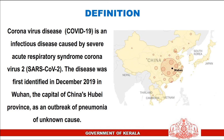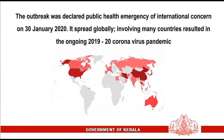Definition. COVID-19 is an infectious disease caused by severe acute respiratory syndrome coronavirus 2. The disease was first identified in December 2019 in Wuhan, the capital of China's Hubei province, as an outbreak of pneumonia of unknown cause. The outbreak was declared a public health emergency of international concern on January 30, 2020, and spread globally, involving many countries, resulting in the ongoing 2019-20 coronavirus pandemic.